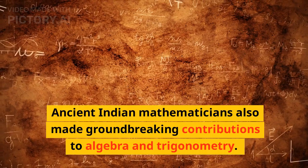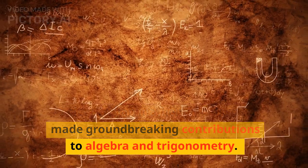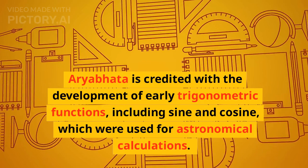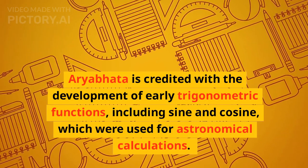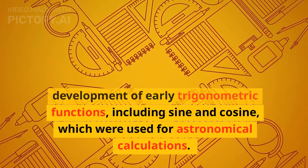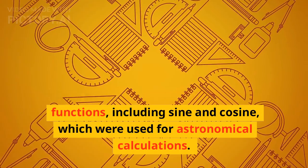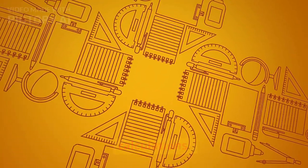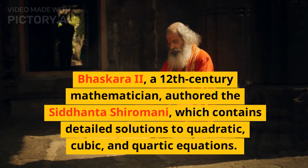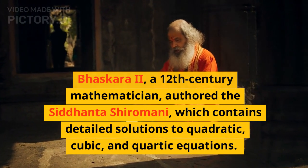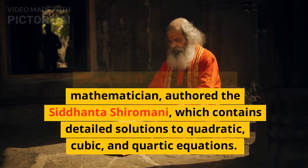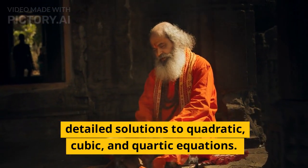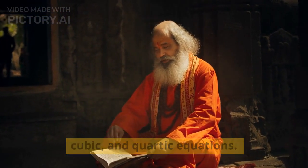Ancient Indian mathematicians also made groundbreaking contributions to algebra and trigonometry. Aryabhata is credited with the development of early trigonometric functions, including sine and cosine, which were used for astronomical calculations. Bhaskara II, a 12th century mathematician, authored the Siddhanta Shiromani, which contains detailed solutions to quadratic, cubic, and quartic equations.